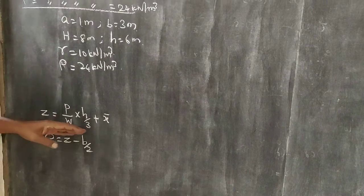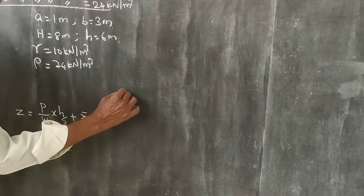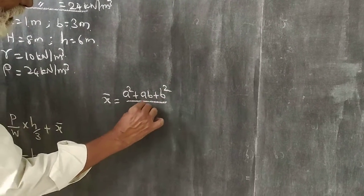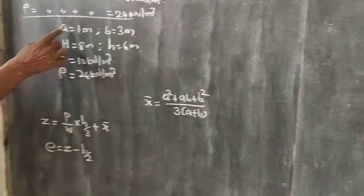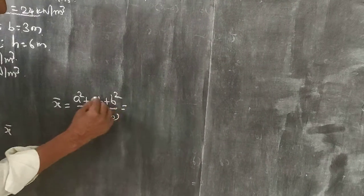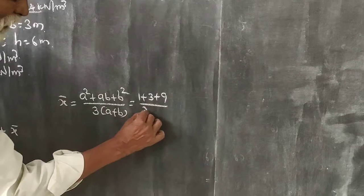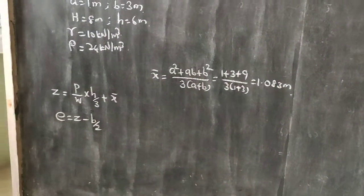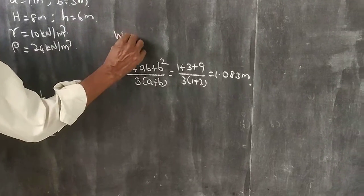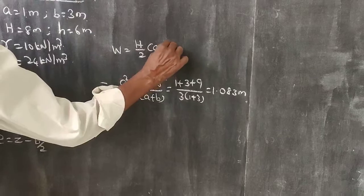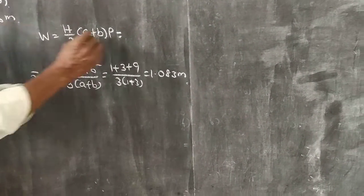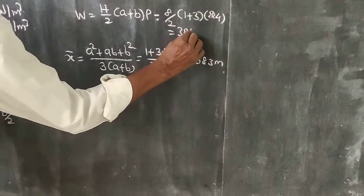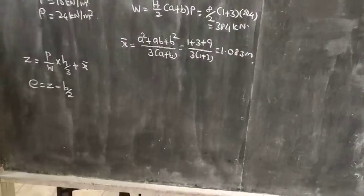X bar equals A square plus AB plus B square by 3 into A plus B. Substituting A equals 1 and B equals 3: 1 plus 3 plus 9 by 3 into 1 plus 3, which gives x bar equals 1.083. W equals H by 2 into A plus B into rho, the specific weight of masonry. W equals 8 by 2 into 1 plus 3 into 24, which is 384 kN, the weight of the dam.